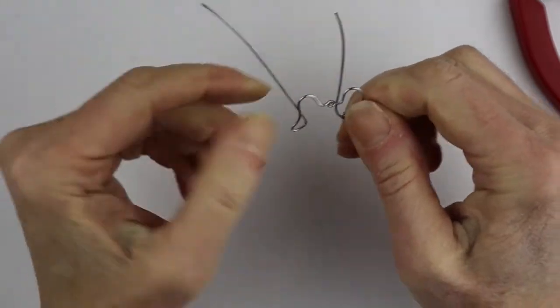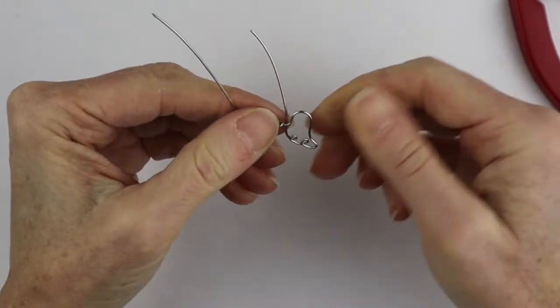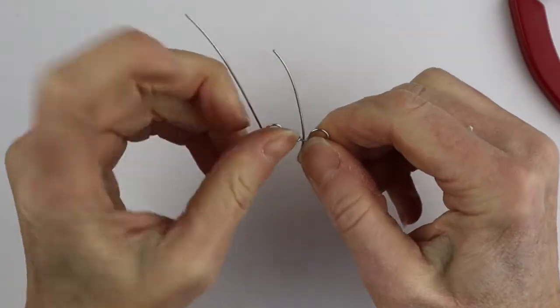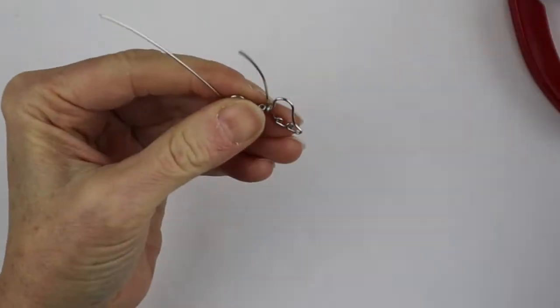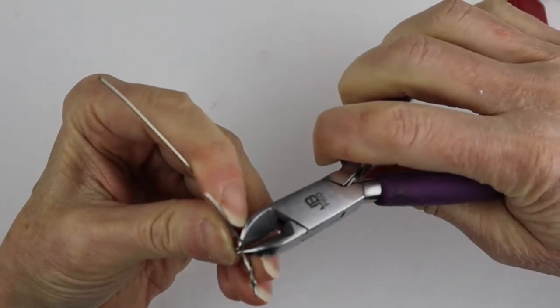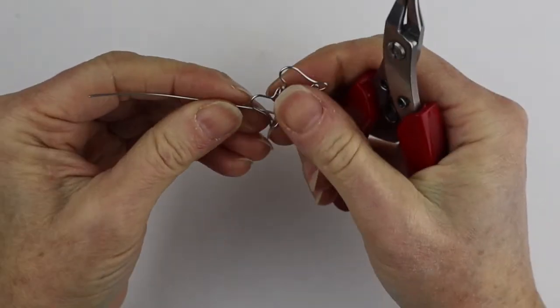And then to finish it, we want to wrap it around here. So we're going to hold it and just give it a single wrap around. Single wrap around there and cut it and then the same on this side.